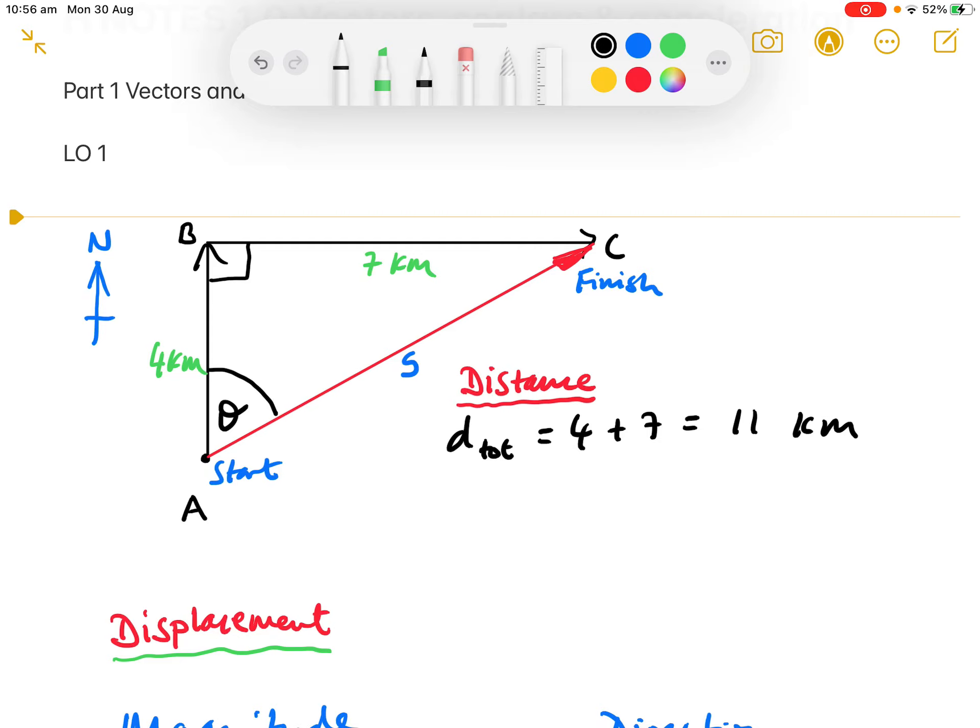The distance that he's traveled is quite straightforward. The distance is the actual number of meters he's covered, so that's clearly 4 kilometers in the northern section, plus 7 kilometers in the eastern section, giving a total of 11 kilometers.